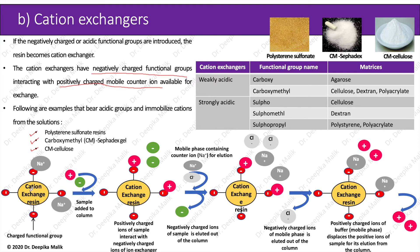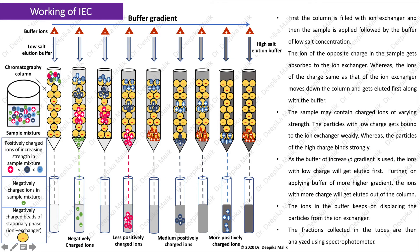The diagram shows a cation exchanger which contains a resin to which negatively charged functional groups are attached, which interact with the mobile counter ions — in this case sodium ions. When the sample mixture is introduced into the column, the negatively charged ions in the sample elute out first from the column without interacting with the resins, whereas the positively charged ions of the sample mixture interact with the negatively charged functional groups of the exchanger. After that, when mobile phase containing the counter ions is introduced into the column, the sodium ions displace the positive ions of the sample for its elution from the column.